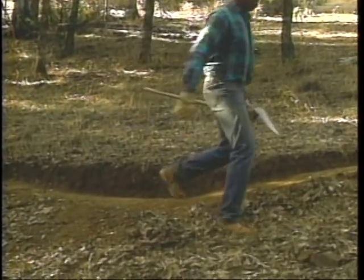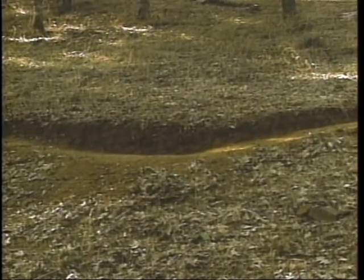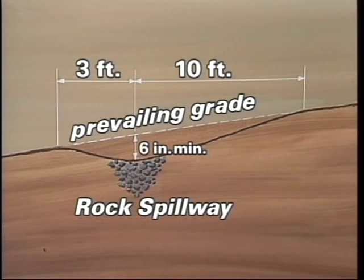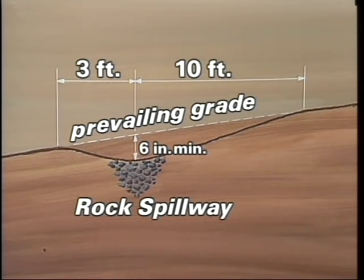Outslope the dip three-quarters to one-and-a-quarter inches for every foot of trail width. Once you've completed this shallow ditch, feather the trail into and out of the dip on either side — approximately 10 feet upgrade and approximately 3 feet downgrade. The downgrade section actually has an opposite grade to the prevailing grade of the trail, so water can't flow past this point and flows out at the spill point.